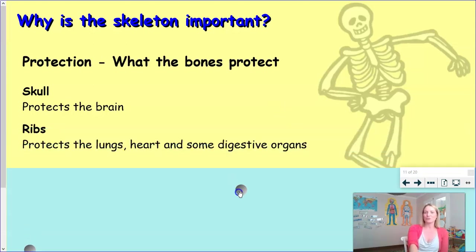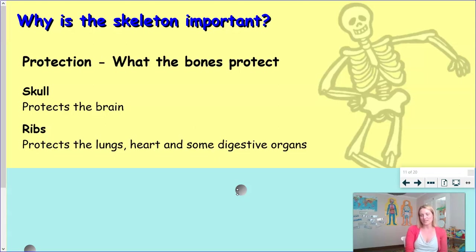Your ribs protect your lungs, your heart, and some of your digestive organs, such as part of your kidneys and your liver, and a little bit of your stomach. But the main job of your ribs is to protect those organs.